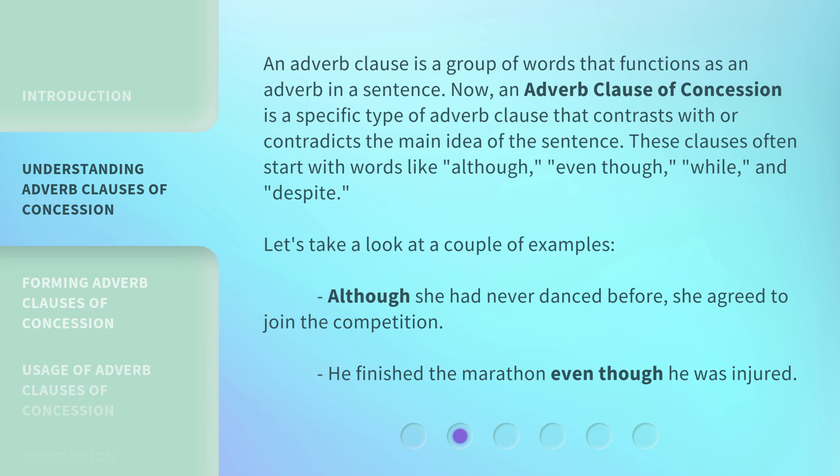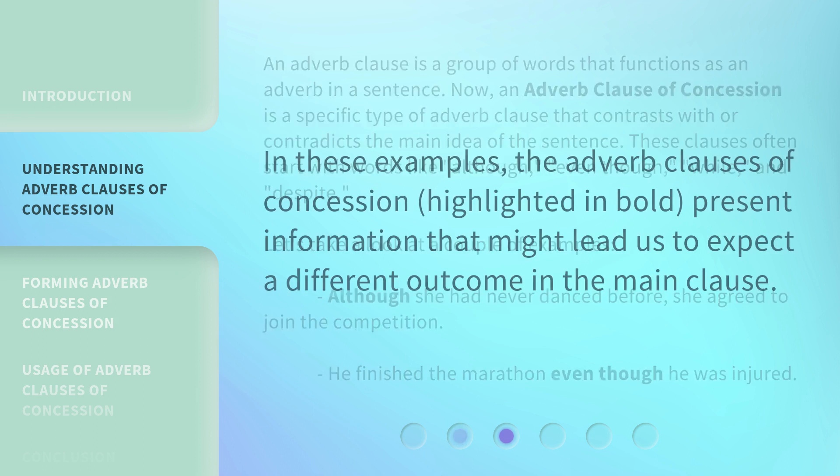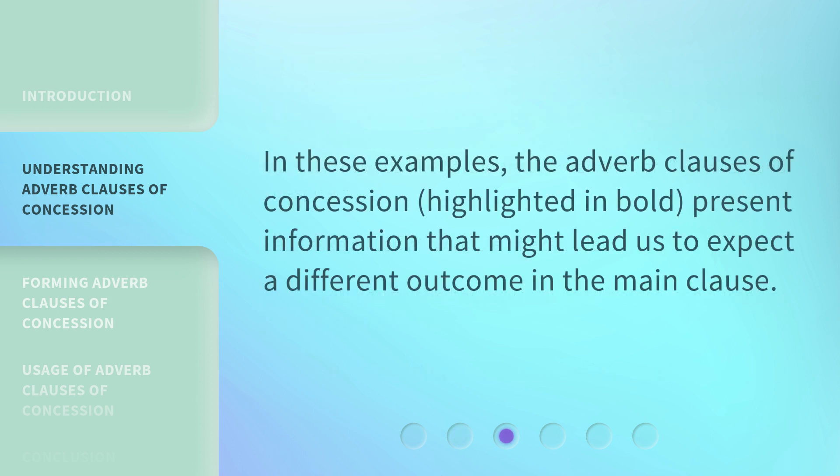Let's take a look at a couple of examples. Although she had never danced before, she agreed to join the competition. He finished the marathon even though he was injured. In these examples, the adverb clauses of concession highlighted in bold present information that might lead us to expect a different outcome in the main clause.